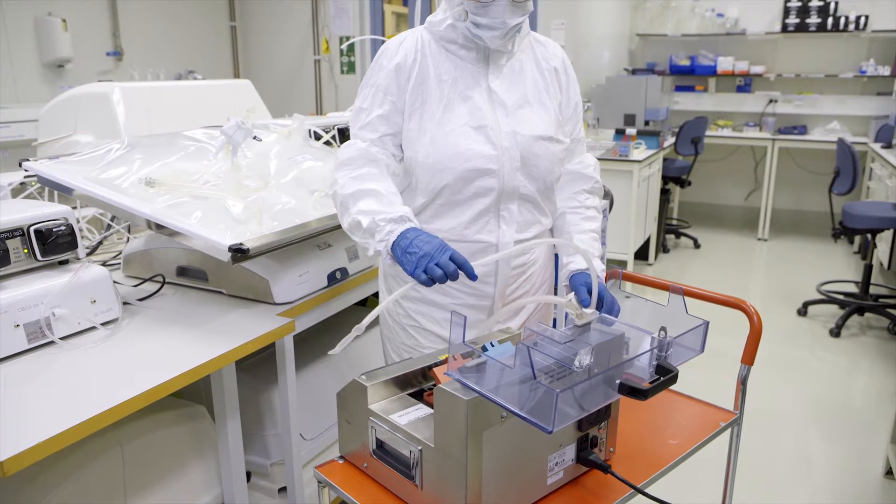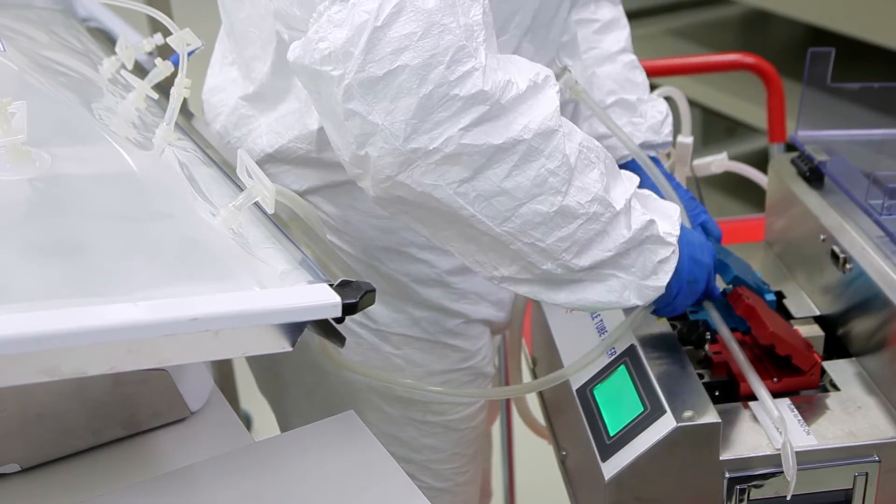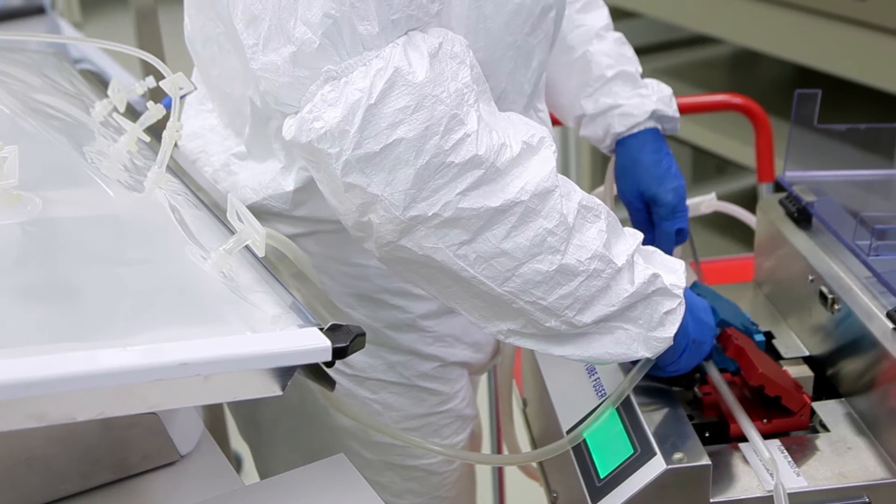Insert the appropriate welding block for the tubing diameter and a sharp blade into the welder. The Cytodex gamma container is welded together with the single-use reactor using tubings of the same diameter.